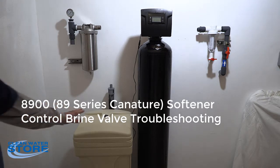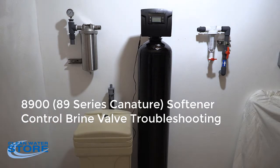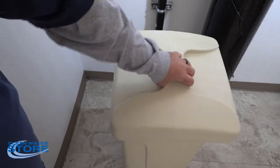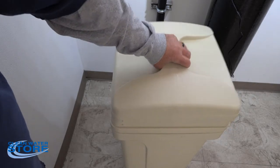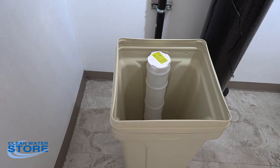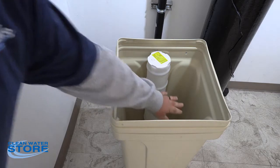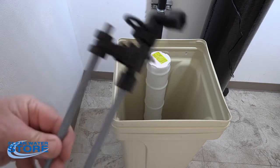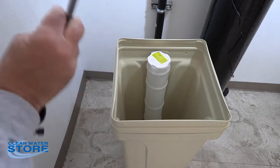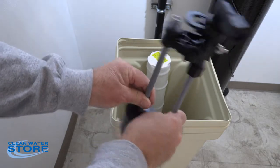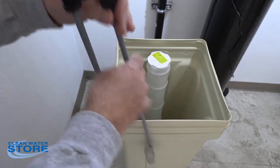So the first thing we're going to do is check out the float assembly inside the tank. We offer several types of different float assemblies in these brine tanks, so the first thing you're going to want to do is remove your lid and notice your water level. This is your switch on the float assembly, and there's also a little ball in the bottom here.